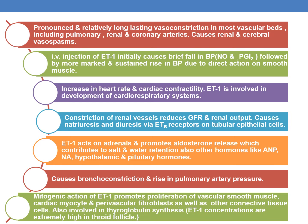Endothelin I also increases heart rate and contractility. It is involved in the development of cardiorespiratory systems, hence endothelin antagonists are contraindicated in pregnancy and are found to be teratogenic in animals. ET1 causes constriction of renal vessels, reduces glomerular filtration rate and renal output, and causes natriuresis and diuresis via ETB receptors on tubular epithelial cells. ET1 also acts on adrenals and promotes aldosterone release, further contributing to salt and water retention.